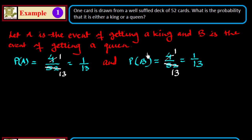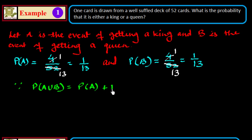We know that P(A∪B) = P(A) + P(B). Both events are mutually exclusive because if you are getting a king you are not getting a queen, and if you are getting a queen you are not getting a king. So the events are mutually exclusive to each other. Now we substitute the values.